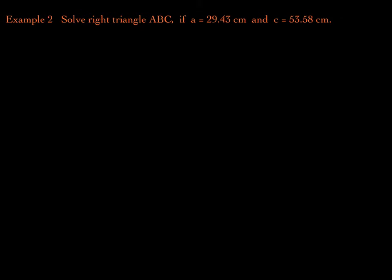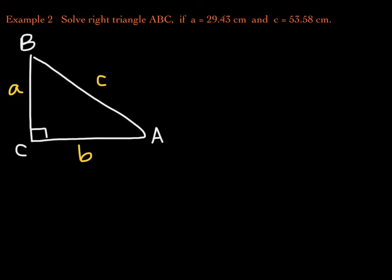A new example: solve right triangle ABC if side A is 29.43 centimeters and side C is 53.58 centimeters. Let's draw a picture. In this example, notice that this leg is given to you, and the hypotenuse is also given. So the missing side length will probably be found using the Pythagorean theorem. But notice that angles A and B need to be found — we know C is a 90-degree angle. We're going to have to use a trig function in order to find angles A and B.